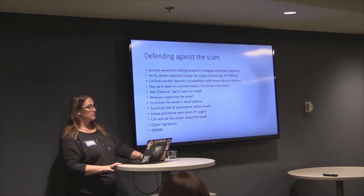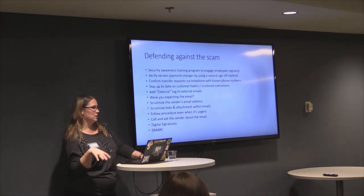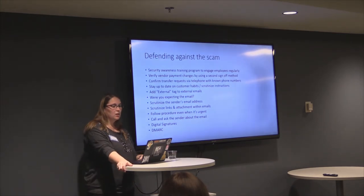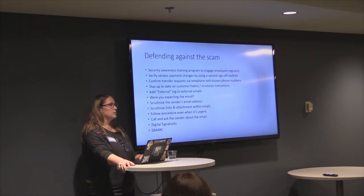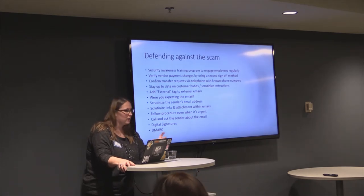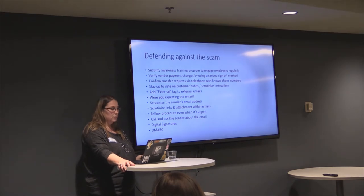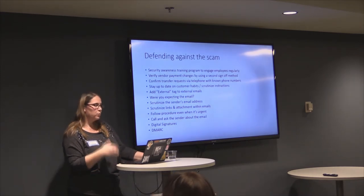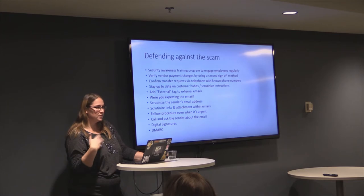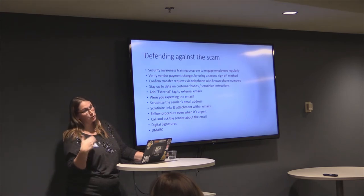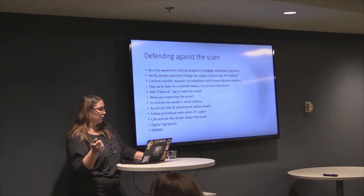If your company does vendor payments, use a secure secondary sign-off method so they can't just email in to change wiring information. Confirm transfers via telephone with known phone numbers — don't call whatever number is in the email signature; pull out your SOP and call from your known contact list. Also stay up to date with customer habits and scrutinize instructions — if you're used to processing invoices a certain way and that suddenly changes, that should raise a red flag.